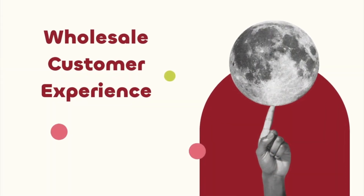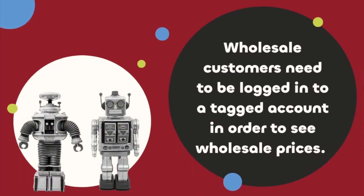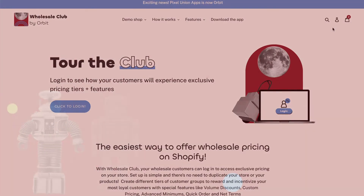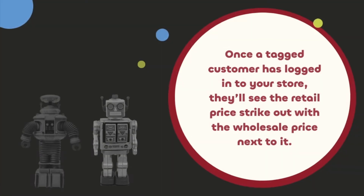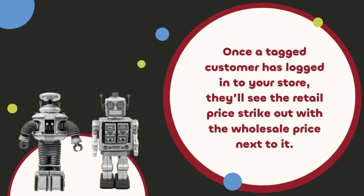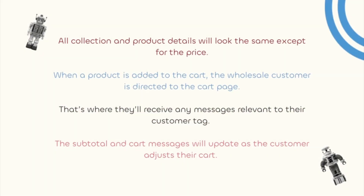Now let's take a look at the customer experience. Wholesale customers need to be logged into a tagged account in order to see wholesale prices — without logging in, the app can't differentiate them from retail customers. Wholesale customers log in the same way retail customers do, using the standard Shopify customer account login. Once a tagged customer has logged in, they'll see the retail price struck out with the wholesale price next to it. The retail price can be used as your MSRP. When a product is added to the cart, the wholesale customer is directed to the cart page where they'll receive any messages relevant to their customer tag.